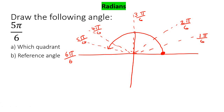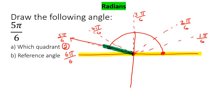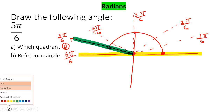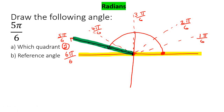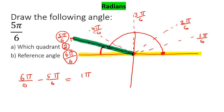So that is quadrant 2. To find the reference angle, we highlight that axis and draw in the terminal side from the center. To find the angle between the terminal side and the x-axis, we say 6π/6 minus 5π/6, and that's just going to be 1π/6. That would be our reference angle.